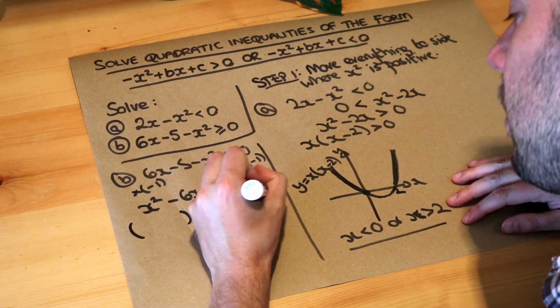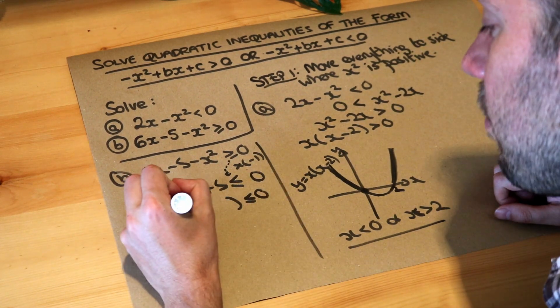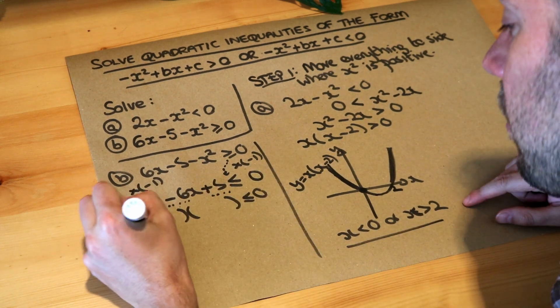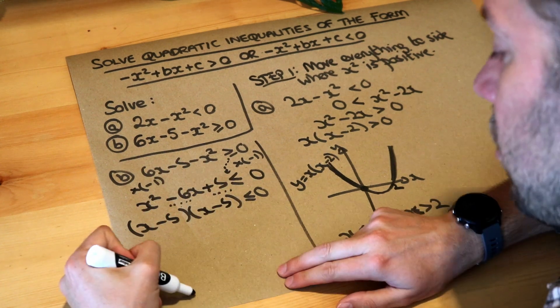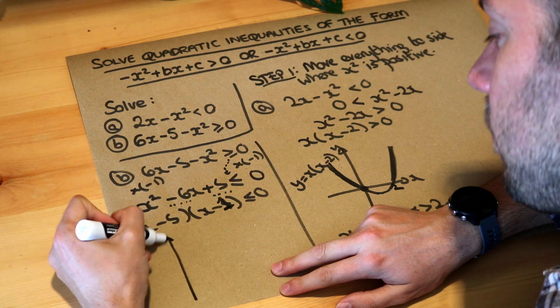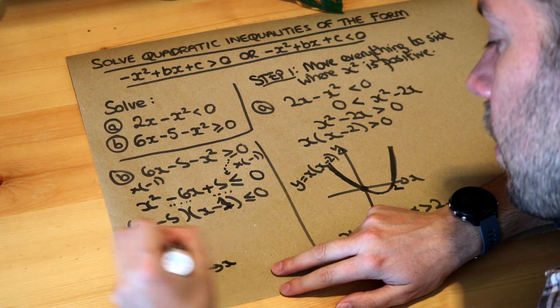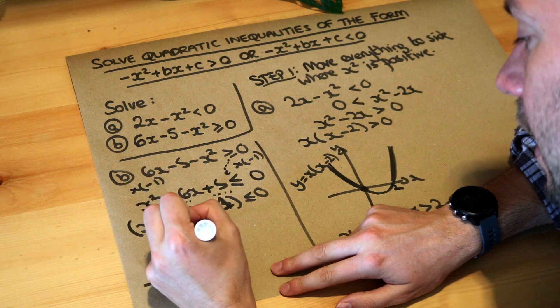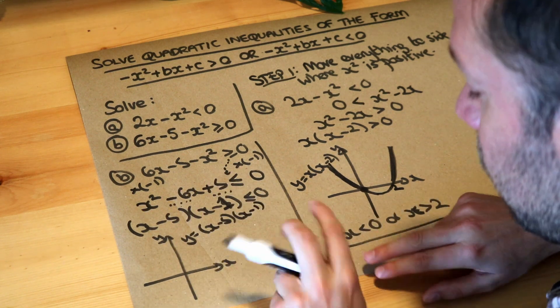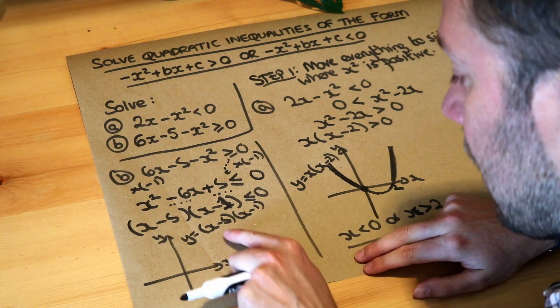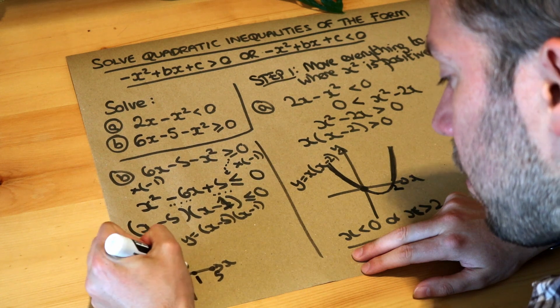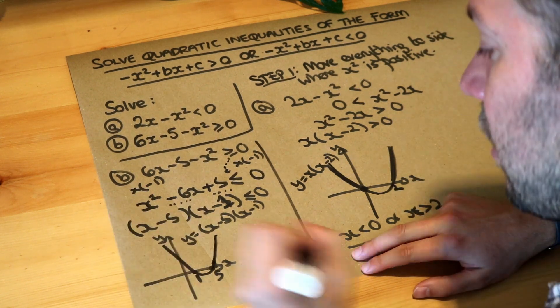So we just need two numbers which add to give minus six, times to give five. They are minus five and minus one so it's x minus five x minus one. We then do a sketch. We're sketching y equals this thing here so the x minus five x minus one and we just negate each of these values to get the x intercepts so we have five and one which is here so we get this smiley face shape like that.